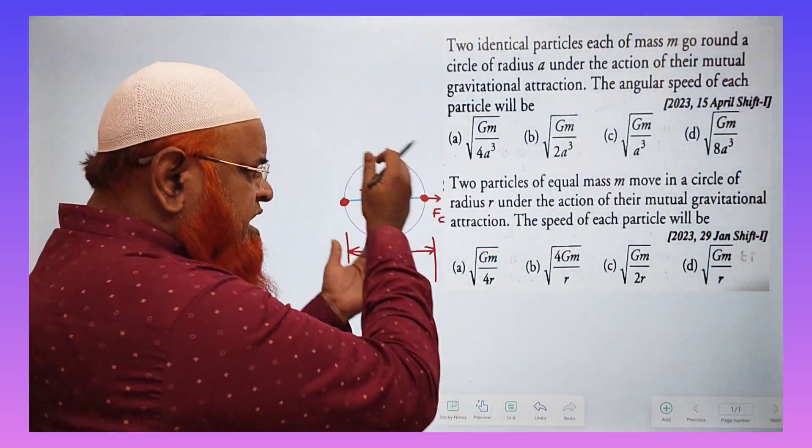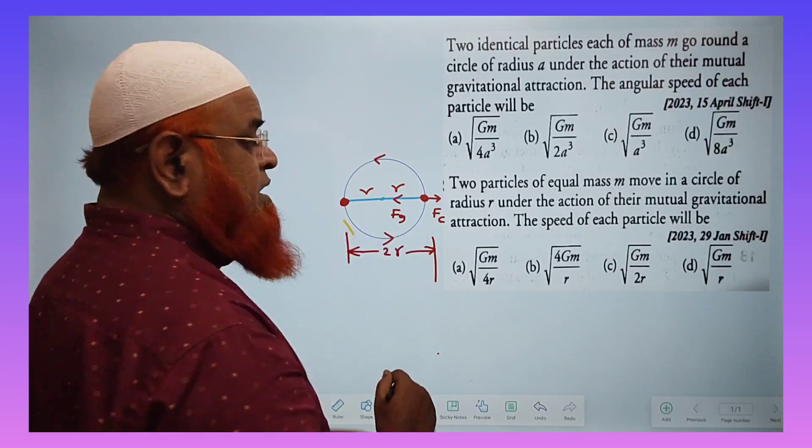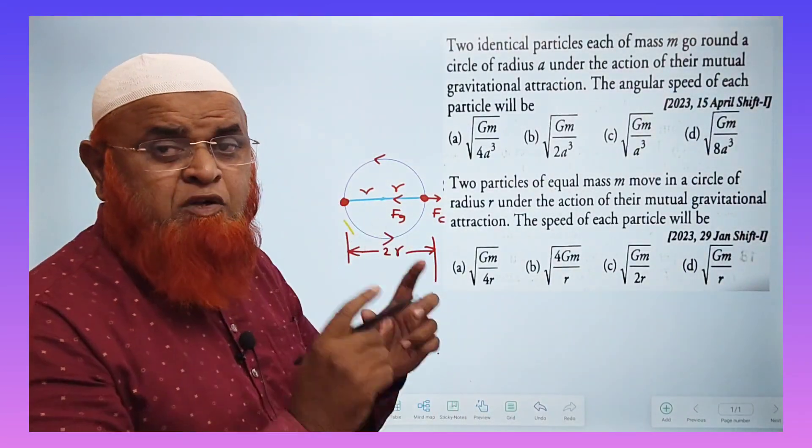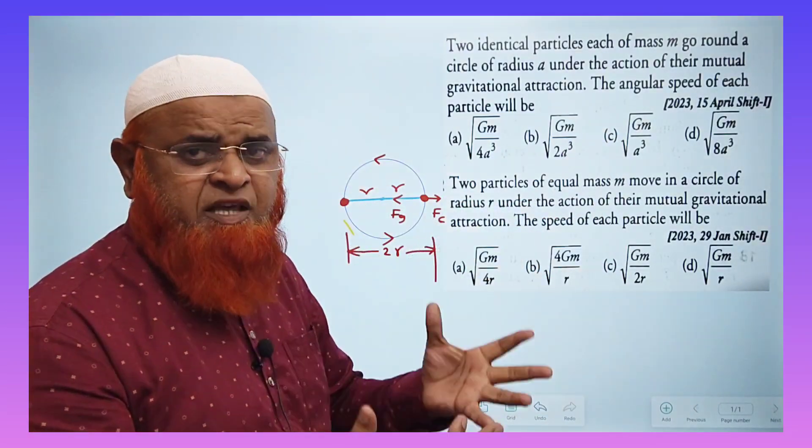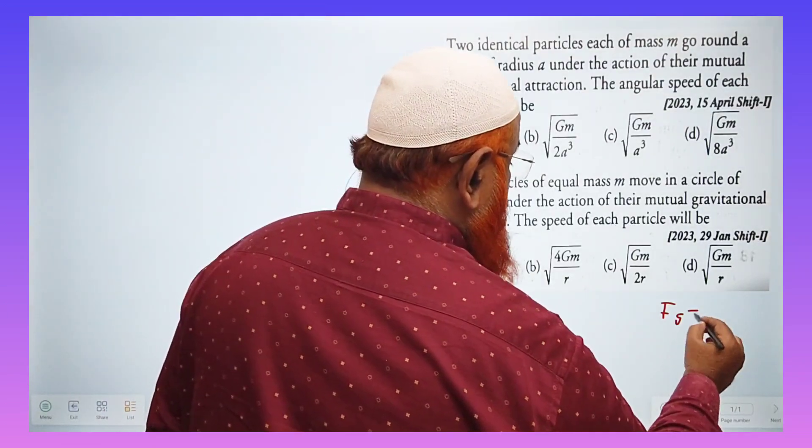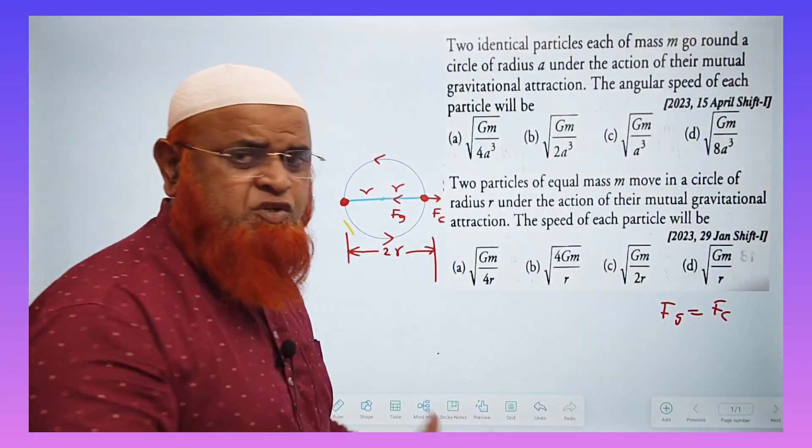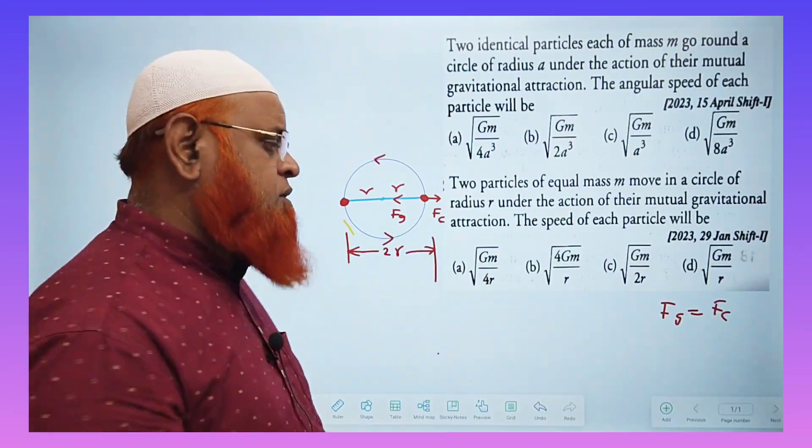When they are rotating the same circle, you should understand one thing that they are having two forces. One is centrifugal force, another is gravitational force of attraction between them. How are you going to solve this problem? You can just see. Gravitational force is equal to centrifugal force. These two forces counterbalance each other. That is the reason why it is able to continuously move with the same center.